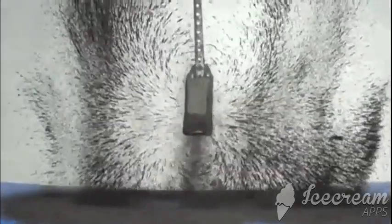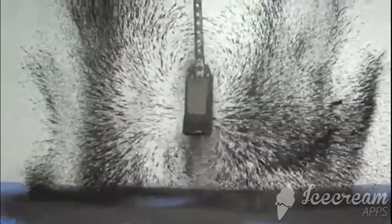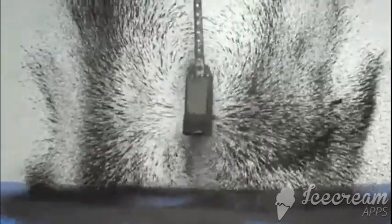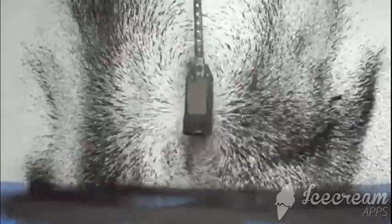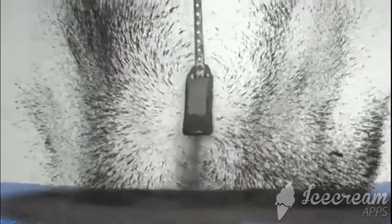So here this shows a simple experiment about the arrangement of the magnetic field around the magnet. Here these are iron boundaries, and here you can see the arrangement of the magnetic field around the magnet.